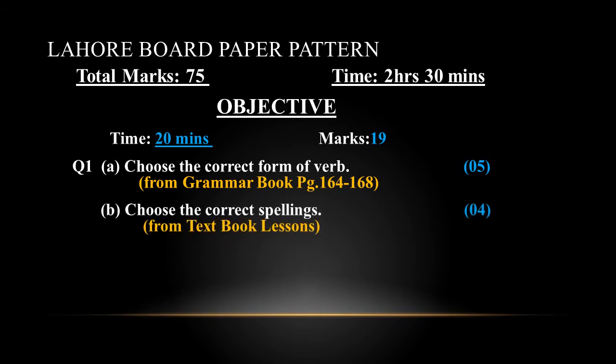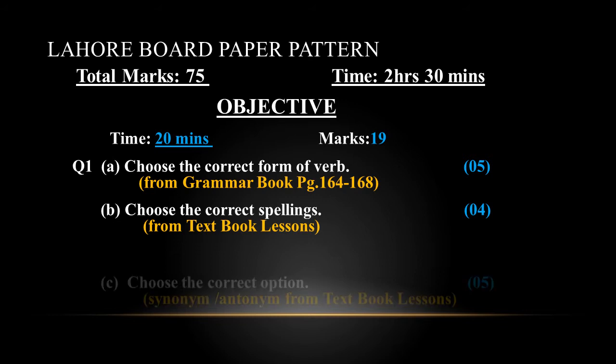Part B is 'choose the correct spellings.' Words for spellings are selected from textbook lessons and it is of 4 marks.